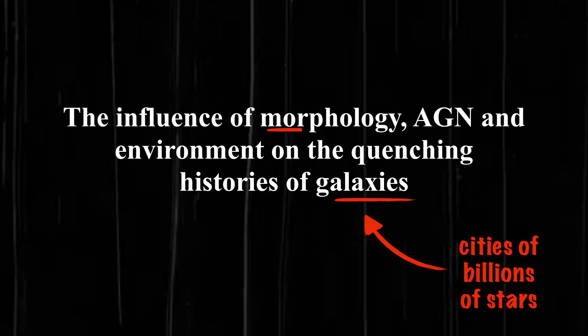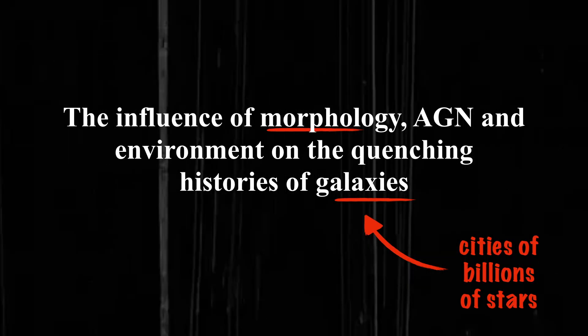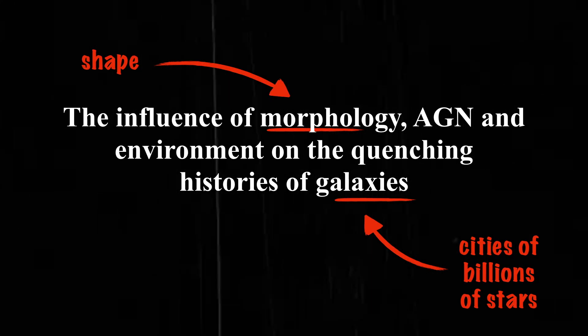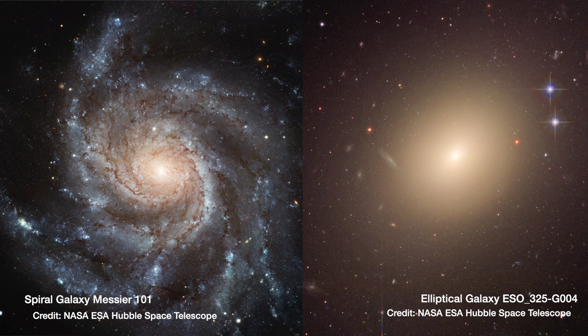Then we have morphology. Morphology is basically a fancy word for shape - essentially looking at what shape a galaxy is. Is it a spiral shape or is it more of a blobby, round shape?